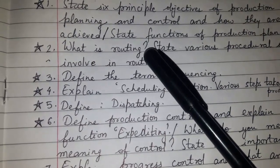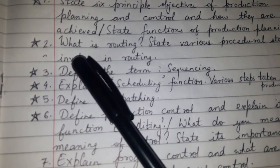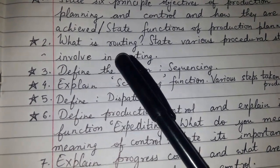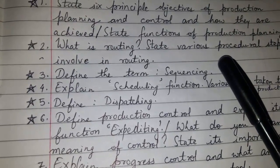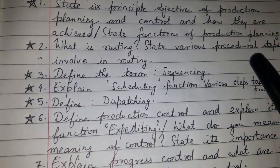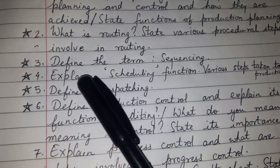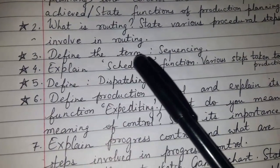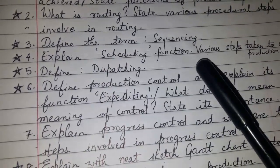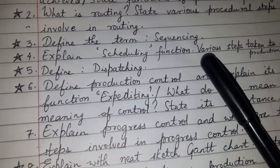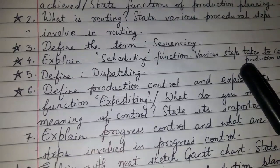Question 1: State six principal objectives of production planning and control and how they are achieved. This can also be asked as: state the functions of production planning. Question 2: What is routing? State the various procedural steps involved in routing.